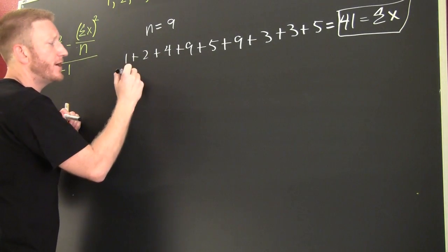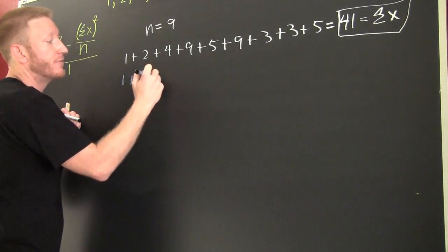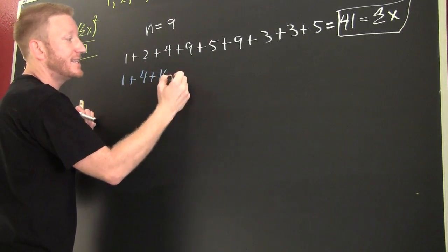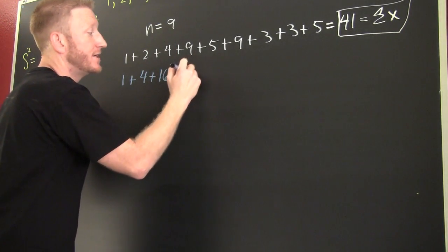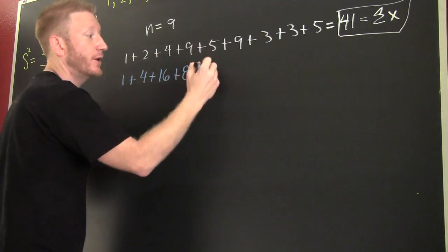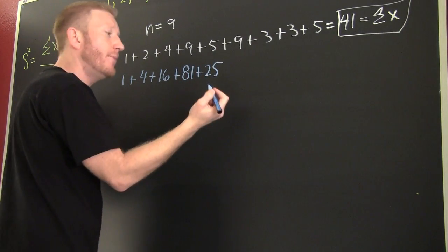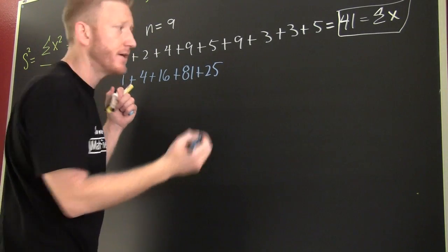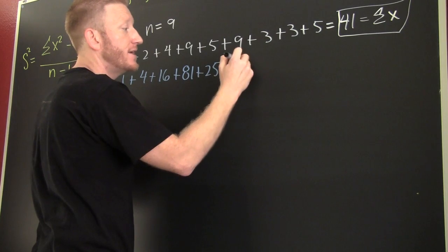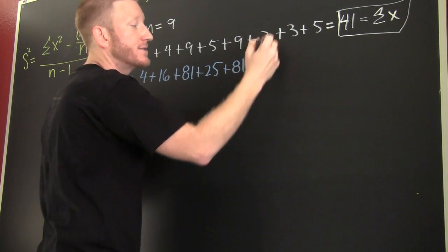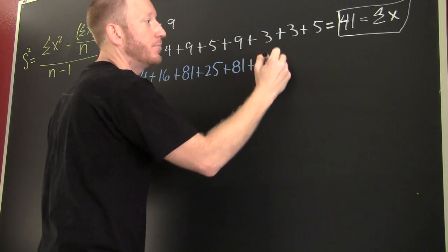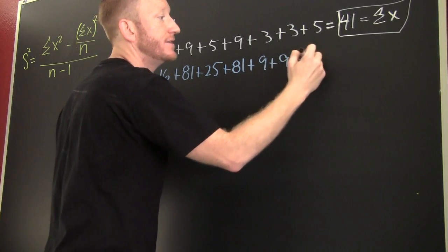This is 1. 2 squared is 4. 4 squared is 16. 9 squared is 81. 5 squared is 25. What am I doing? I'm finding the sum of their squares. Plus 9 squared is 81. Plus 9. Plus 9. Plus 25.